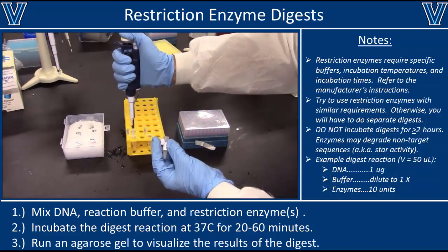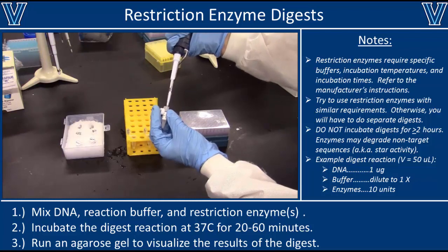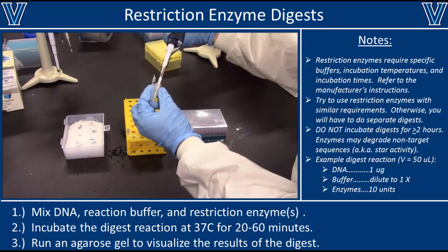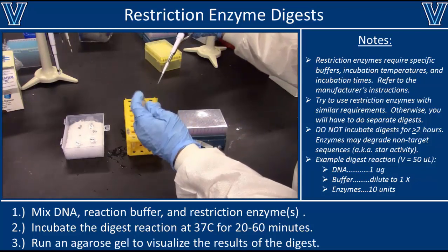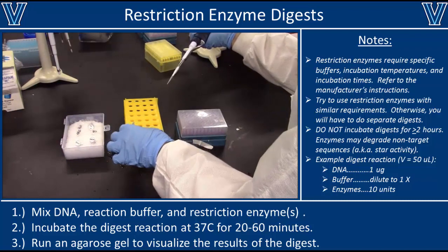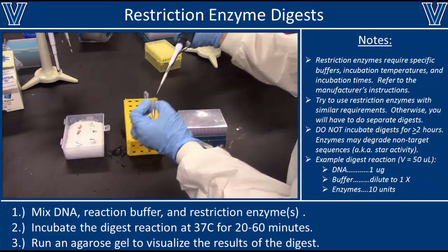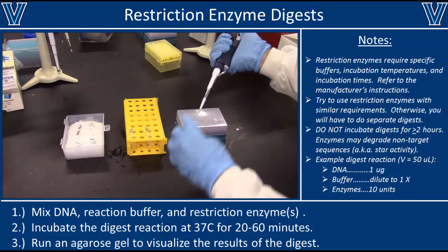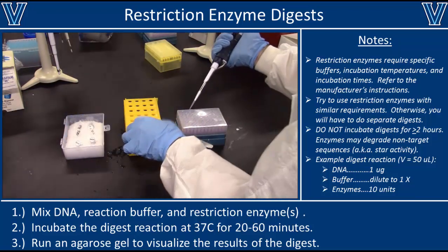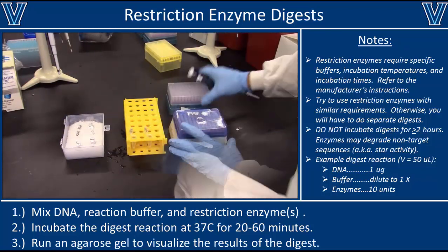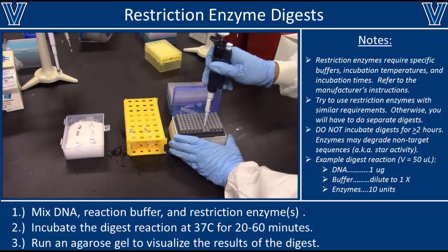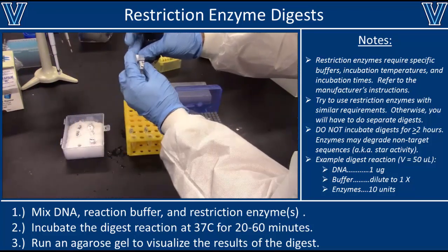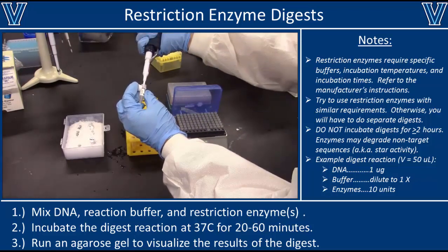Begin by adding the necessary amount of water to each tube. Next, add your buffer — most buffers come as a 10x concentrate, so since this is a 50 microliter reaction, we're adding 5 microliters of 10x concentrate to each tube. Once the buffer is added, add the appropriate amount of DNA. In this reaction we're digesting 1 microgram of DNA, so if your DNA is at a concentration of 50 nanograms per microliter, you would add 20 microliters to each tube.